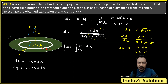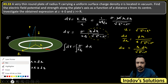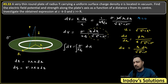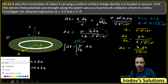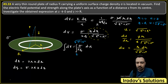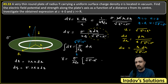When r varies from 0 to capital R, the limits on u are: when r = 0, u = z; when r = R, u = √(R² + z²). Integrating dV = sigma/(2ε₀) · du from u = z to u = √(z² + R²), we get the expression for the potential: V = sigma/(2ε₀) · [√(z² + R²) − z].